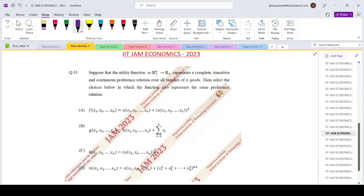Hello everyone, welcoming you to Shorupsers classes and today we are looking at the IIT JAM Economics 2023 question number 31. This is from the multiple correct choice section, section B of the question paper.